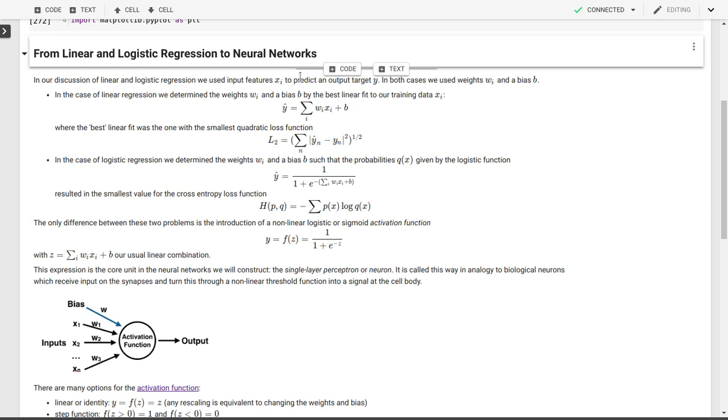In determining how to connect our input features to our output target, we used these weights w sub i and a bias. In the case of linear regression, we determined those weights and bias by doing a best linear fit to our training data. So our training data x sub i with associated values of y, or x sub i for each measurement has one output target y. For each of those measurements, we did a best fit for all of our predicted values y hat and our actual values y sub n.